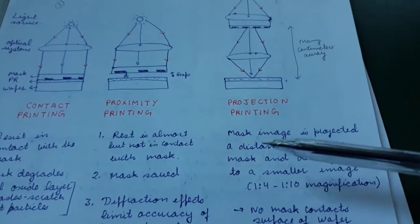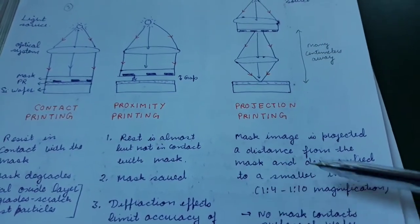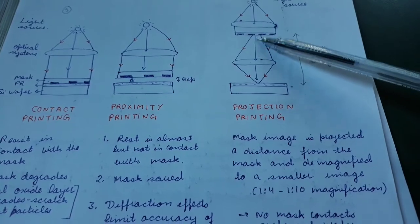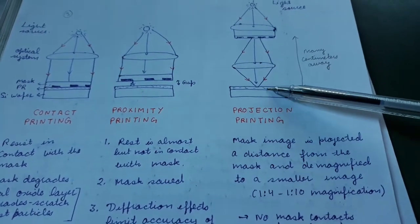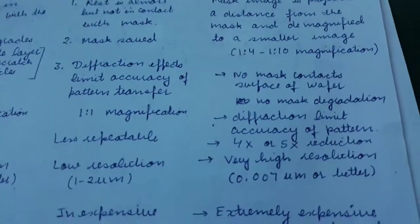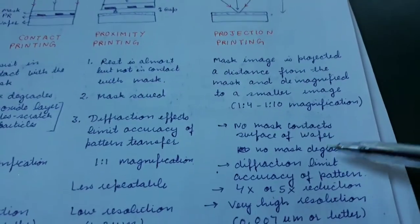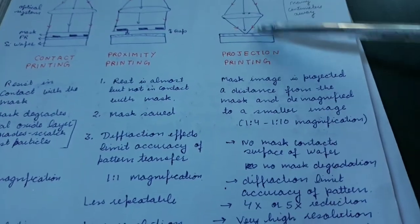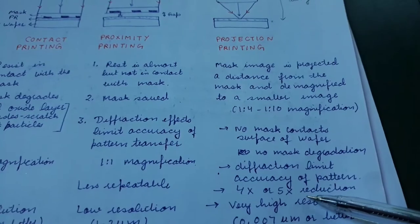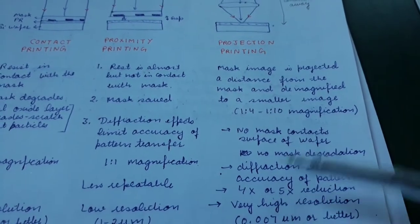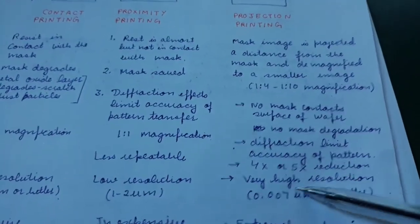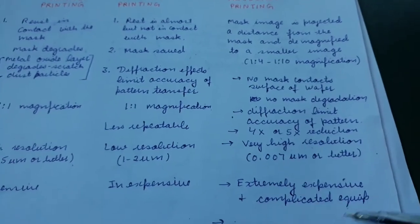In projection printing there is a lens between the reticle and the photoresist, so the mask image is projected and demagnified to a smaller image. Whatever the size of the reticle, it gets smaller on the surface of the wafer. Because the mask is not in contact with the wafer there is no mask degradation. There will be some diffraction effects due to the distance, but the reduction in the size of the projected image is four to five times, giving higher resolution. However, this technique is extremely expensive.